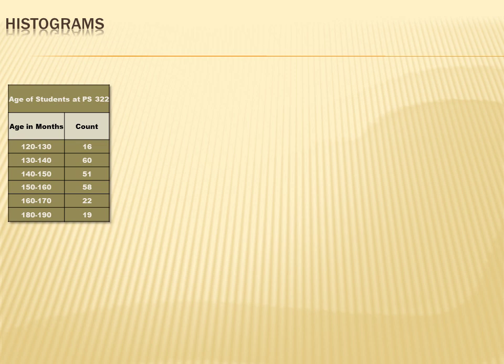Let's look at an example. I've got a data set on the board here that shows the age of students at public school 322. As you can see, I've got two columns. I've got a column with the age in months, and these are ranges of months. And then I've got a column with numbers or frequencies or the counts. And what this means is that for the age range of 120 months to 130 months, there were 16 students at public school 322.